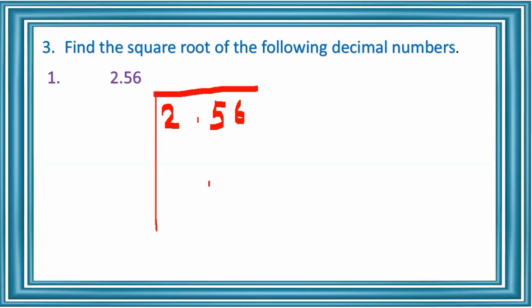Next, we have to group these numbers. There is an integral part and a decimal part. For the integral part, we start from the unit place close to the decimal and move towards the left. Here there is only one number in the integral part, so that is the first group. For the decimal part, we start from the decimal point and move towards the right, so 56 is the second group.